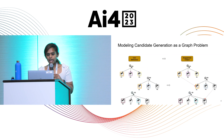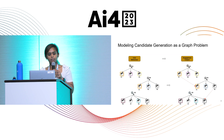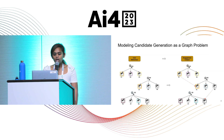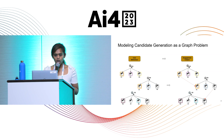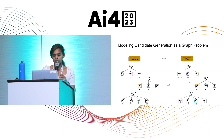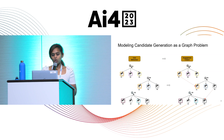I'll quickly explain how we can think of candidate generation as a graph problem with a very simple example. On the left you see a search query — I'll use the term 'query' to represent whatever you type on amazon.com or another e-commerce website. Let's say we have products p1, p2, and p3 being recommended. Even with a very basic recommender system generating random recommendations, the customer has actually clicked on products p1, p2, and p3.